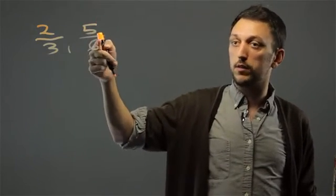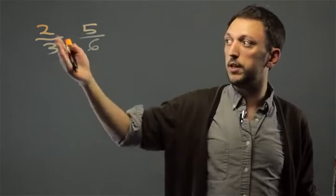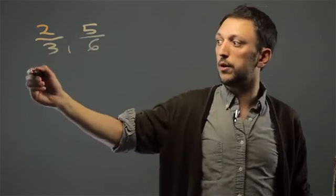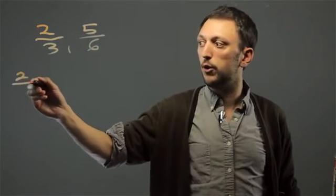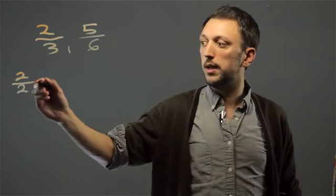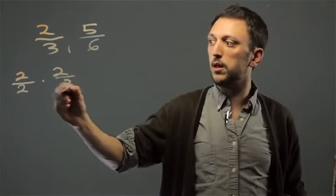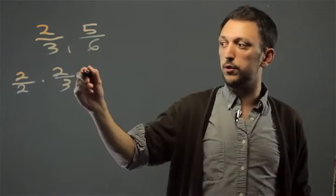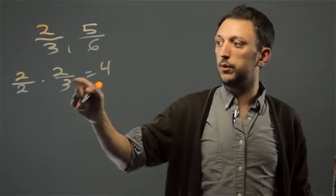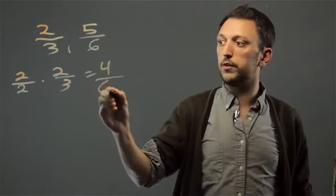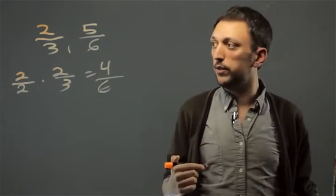So 5 sixths gets to stay as it is. 2 thirds is now going to get multiplied by 2 over 2: 2 times 2 equals 4, 2 times 3 equals 6. So we get 4 sixths, and those are not equivalent.